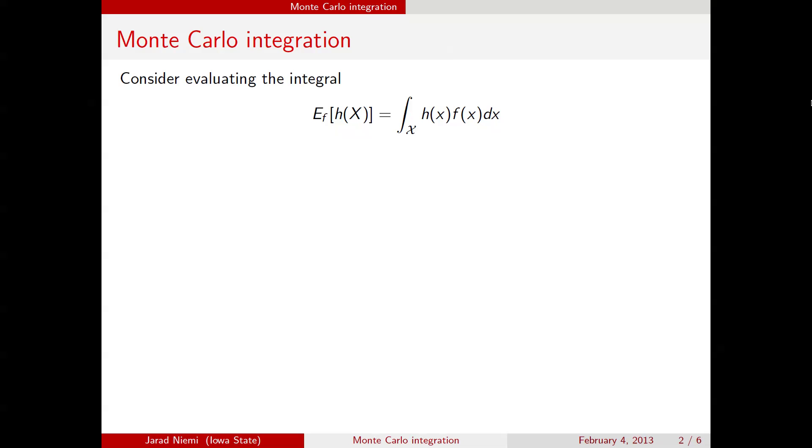So if we can write down the integral that we're trying to solve as the expectation of some function of a random variable, then what we can do is obtain a Monte Carlo estimate. This Monte Carlo estimate is obtained by first sampling a whole bunch of realizations from the distribution for f of x. This might be a normal distribution, a uniform distribution, something of that nature, and so we're going to sample a bunch of values from this distribution, and then we're going to calculate the function h of all those values that we just randomly sampled, and we're going to take the average over all of those values of h.